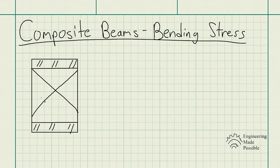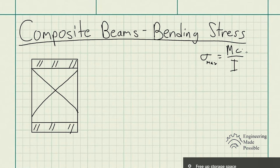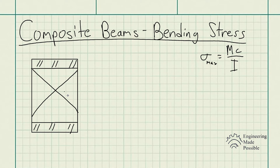The question is: how do you calculate the bending stress when you have a moment within this kind of beam? The previous bending stress equation — moment times C (the distance from the neutral axis to the top or bottom) divided by the area moment of inertia — assumed the material was homogeneous, meaning one material with the same properties throughout. When combining different materials, that is no longer the case, so how do you go about solving for bending stress?